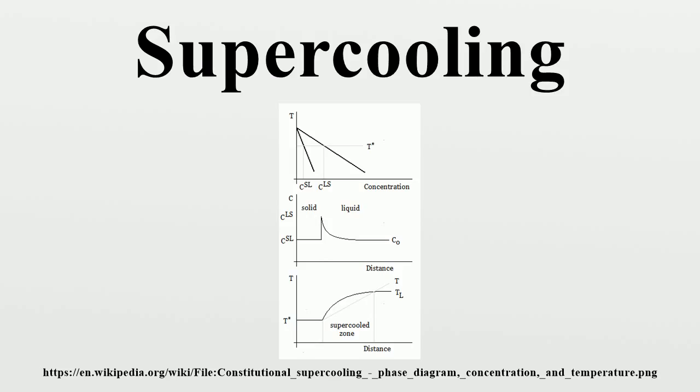When solidifying a liquid, the interface is often unstable, and the velocity of the solid-liquid interface must be small in order to avoid constitutional supercooling. Supercooled zones are observed when the liquidus temperature gradient at the interface is larger than the temperature gradient.